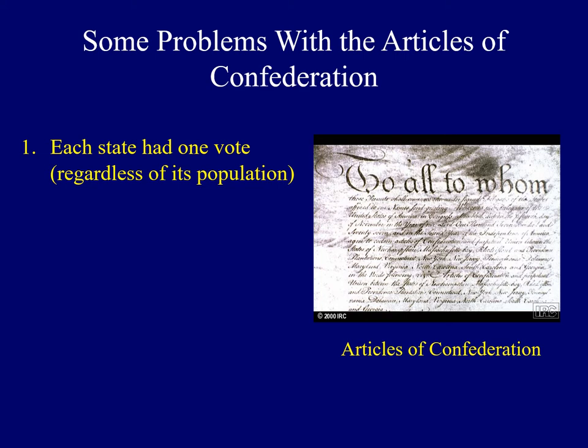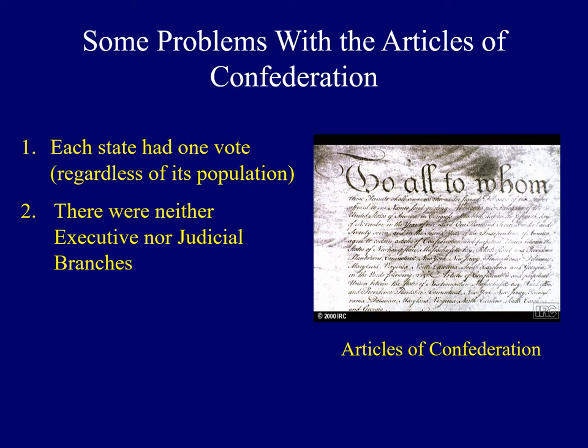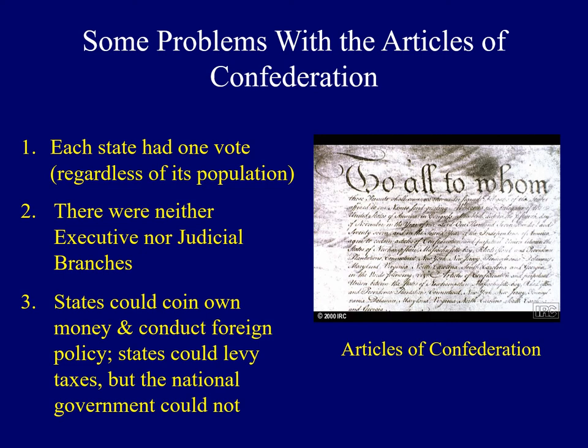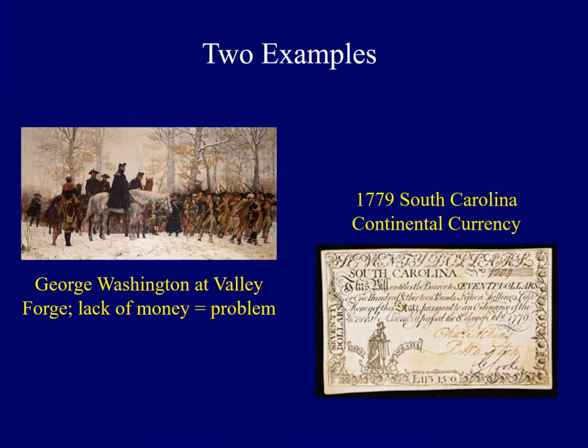There were additional problems with the Articles. Secondly, there was neither an executive nor a judicial branch — essentially only one branch of government, the legislative branch, with a national congress. Finally, states had a tremendous amount of power, including coining their own money and even conducting their own foreign policy. States were allowed to levy taxes, but the national government was not.